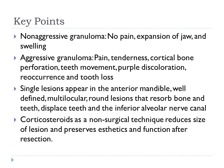To recap: non-aggressive granulomas usually show no pain but do show expansion of the jaw and swelling. Aggressive granulomas present with pain, tenderness, cortical bone perforation, teeth movement, purple discoloration, recurrence, and tooth loss. Lesions typically appear as single, well-defined, multilocular, round lesions in the anterior mandible that resorb bone and teeth and displace the inferior alveolar nerve canal. For treatment, corticosteroids as a non-surgical technique reduce the size of the lesion and preserve aesthetics and function prior to resection.